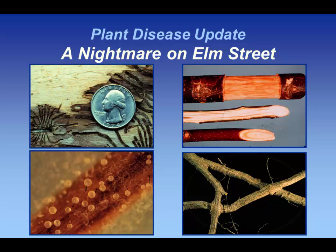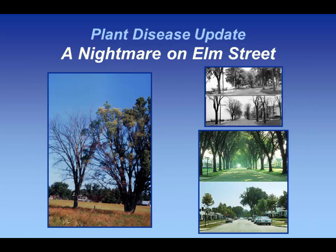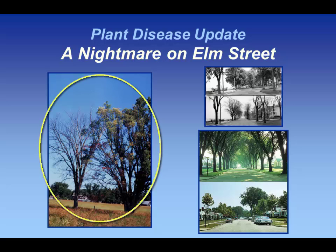The bad part about the fungus is that it is also moved around by root grafts. If you think about American streets with all these elms, all those trees were root-grafted together. So it was initially brought in by the insect into one tree, moved down into the roots, moved through the root grafts, and just moved from tree to tree to tree. That's why in many areas you can see the disease come in at the tree on the left, and then branch die-back starting on the elm tree on the right, having likely moved through a root graft.